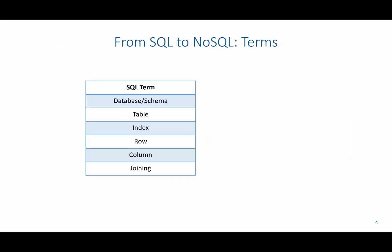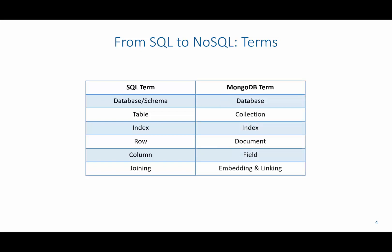From SQL to NoSQL, various terms will be familiar but some will change. They are synonymous in concept but there are differences. The SQL term 'database' or 'schema' maps to 'database' in MongoDB. 'Table' maps to 'collection'. 'Index' remains 'index'. 'Row' maps to 'document'. 'Column' maps to 'field', and 'joining' is replaced by embedding and linking. That's a basic introduction to NoSQL — see subsequent videos for actually interacting with this database.